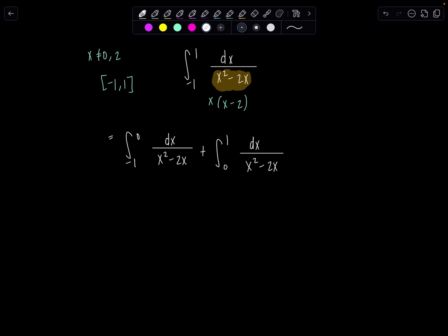And then we'll evaluate each of them separately, but we're going to evaluate them as limits. So remember when you have improper integrals, I'm going to rewrite this first one as the limit as a approaches zero from the left of the integral from negative one to a of dx over x squared minus two x.